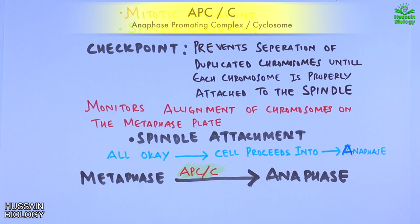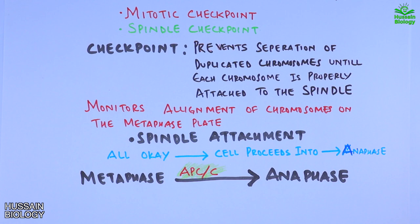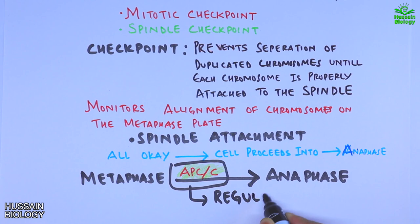The jump from metaphase to anaphase is driven by the APC/C protein. APC stands for Anaphase Promoting Complex, or it's simply called the cyclosome protein. The regulation of the APC protein is one of the important steps here, and it's mediated by the spindle assembly checkpoint.